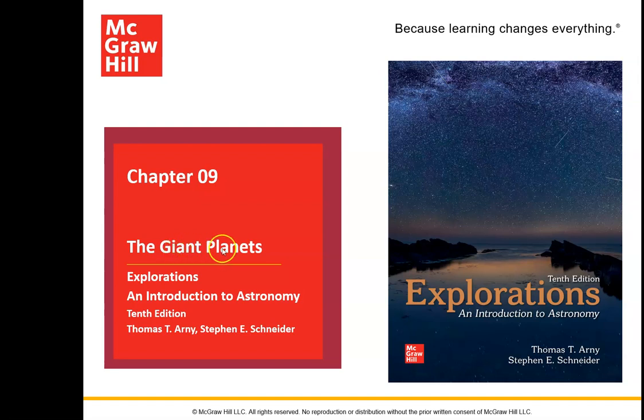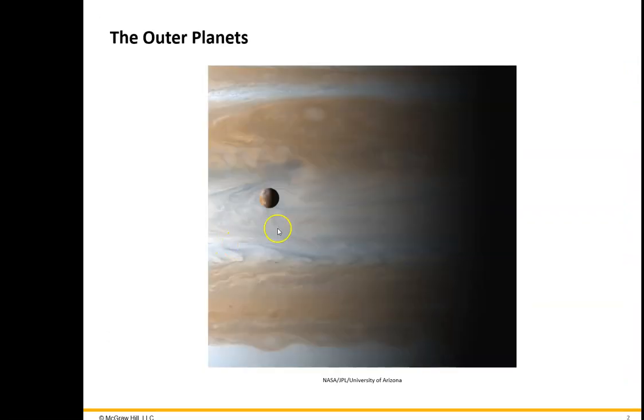Just like the inner worlds are also known as the terrestrial worlds, Earth-like worlds, the ones we studied in chapters six through eight. These outer planets - in fact, this is one of the moons of Jupiter, and this is the zones and bands of Jupiter.